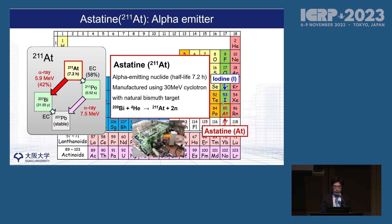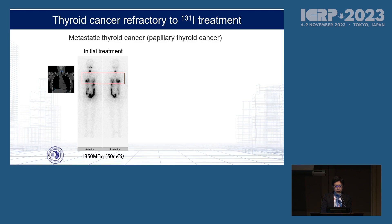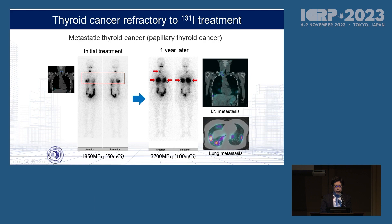Astatine is located just below iodine in the periodic table, so it behaves similarly to iodine. We thought it would be effective in patients refractory to iodine treatment. In this metastatic thyroid cancer case, you can see multiple lung metastases in the iodine treatment image. This patient showed progression in the second treatment — you can see the increase in tumor size of lung metastases and new metastatic regions. In this kind of patient, we need a stronger radionuclide therapy.